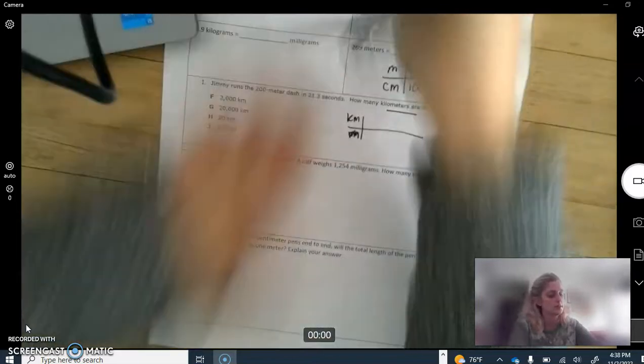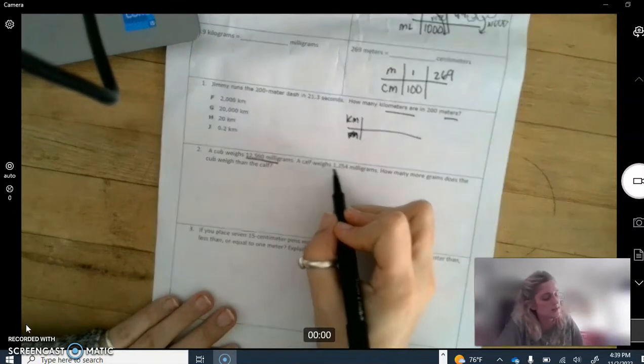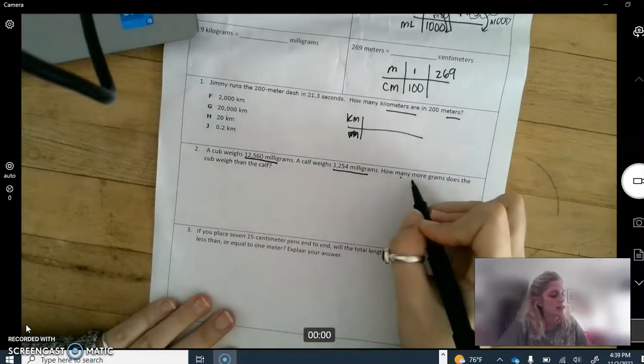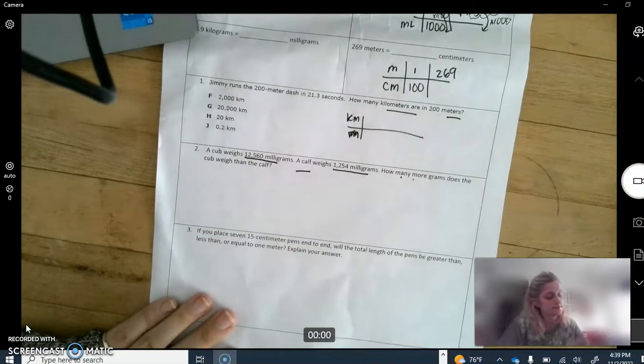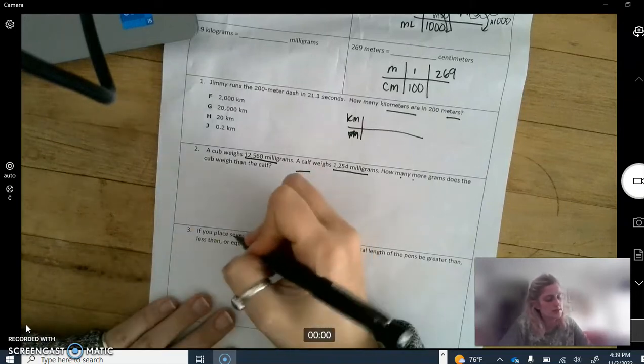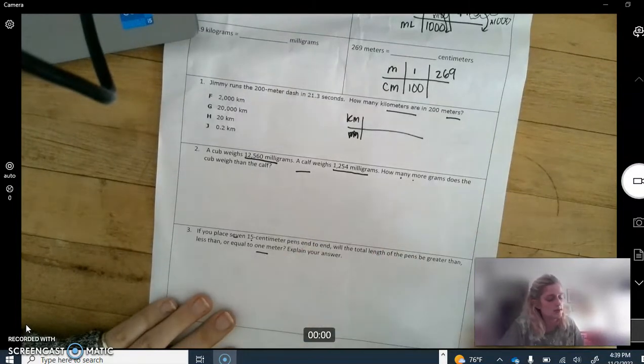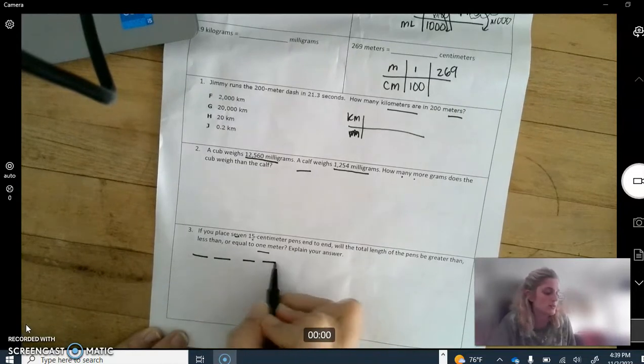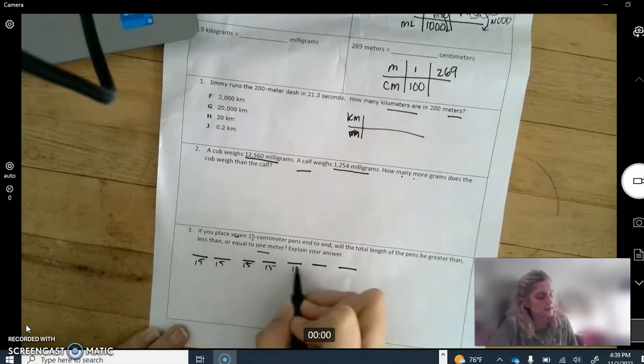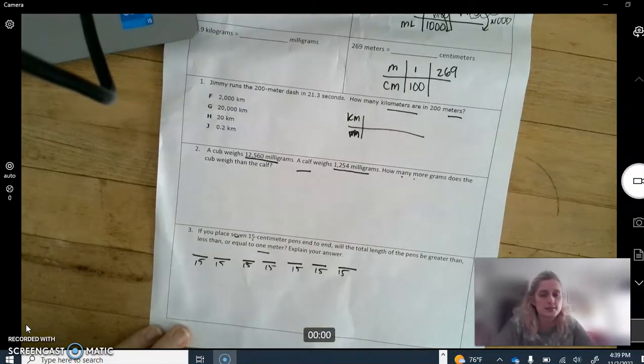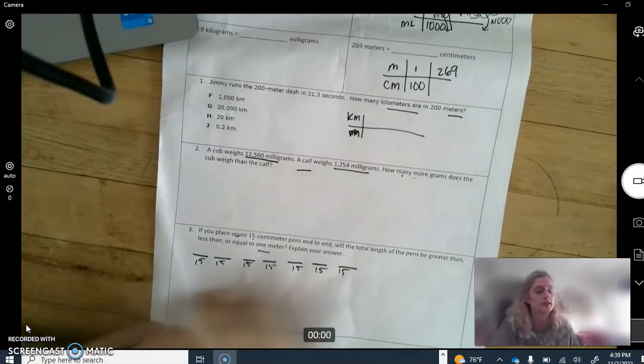Let's do one that's a little bit more than just a conversion. Here we go: a cub weighs 12,560 milligrams, a calf weighs 1,254 milligrams, how many more grams does the cub weigh than the calf? Many more means you are subtracting. If you place seven 15-centimeter pens end to end, will the total length of the pens be greater than, less than, or equal to one meter? So seven pens, one, two, three, four, five, six, seven, each of them is 15 centimeters. You can figure out how long that is, take that number and compare it to the number of centimeters in one meter, then tell me if it's bigger, smaller, or equal to. Flip the page.